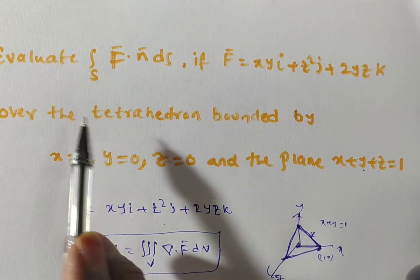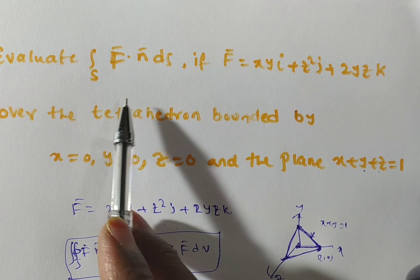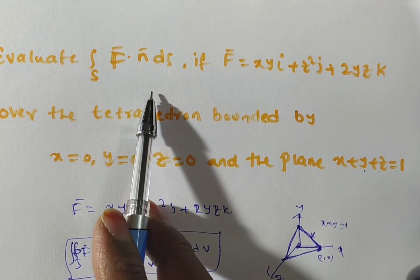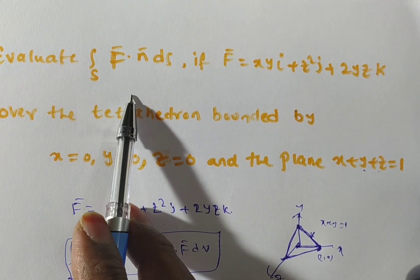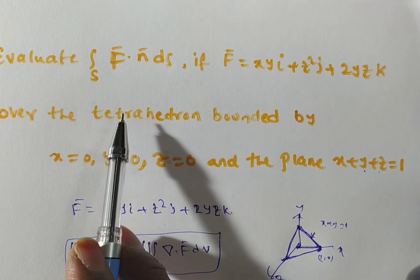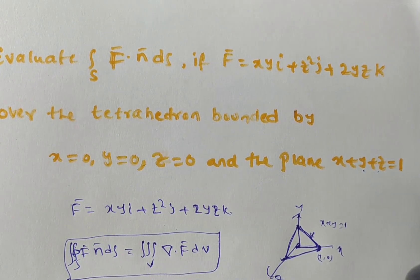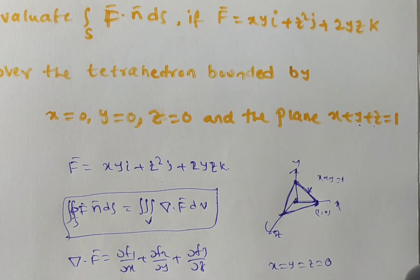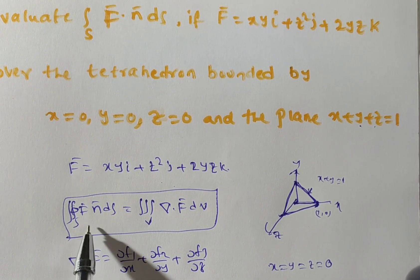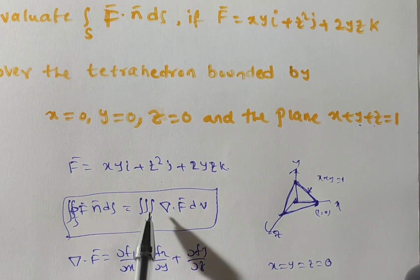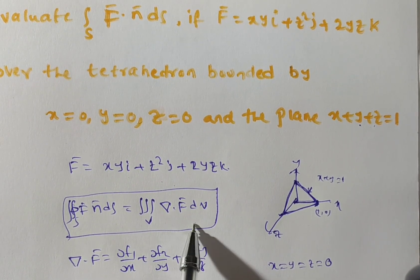We have to evaluate the surface integral f̄ · n̄ dS. We can evaluate this surface integral using the Gauss Divergence Theorem. The formula for the Gauss Divergence Theorem is: double integral over S of f̄ · n̄ dS equals triple integral over V of del · f̄ dV, which is the divergence of f̄.